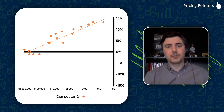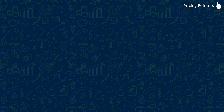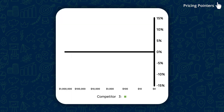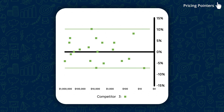Competitor three — the green squares — are all over the place. They're competing on something other than price. Data from this competitor is useful for computing an upper and lower bound for the market, but I wouldn't specifically benchmark against competitor three.